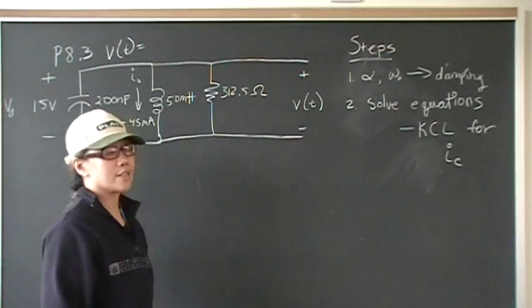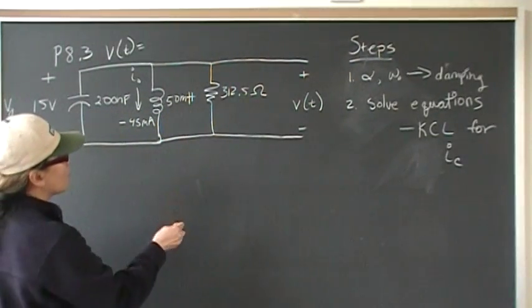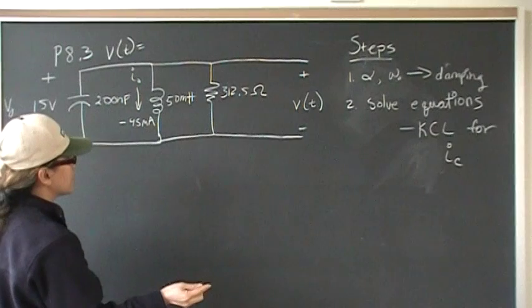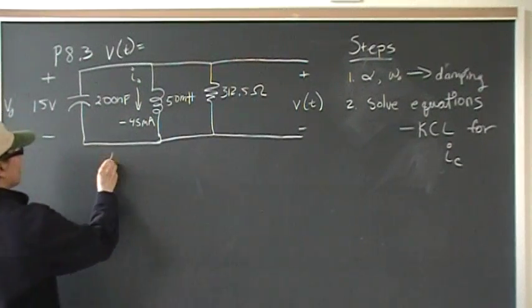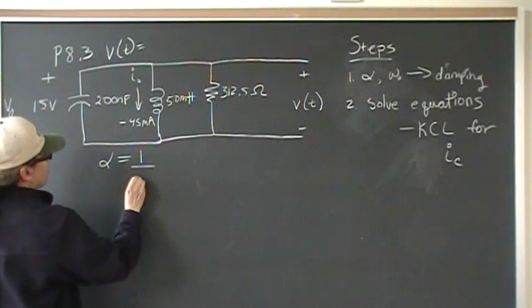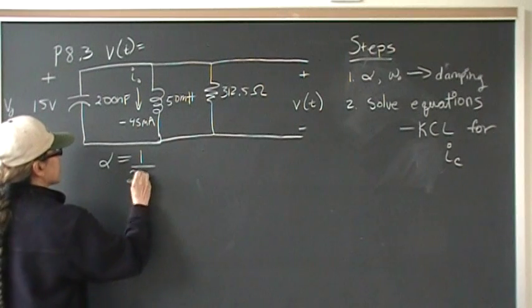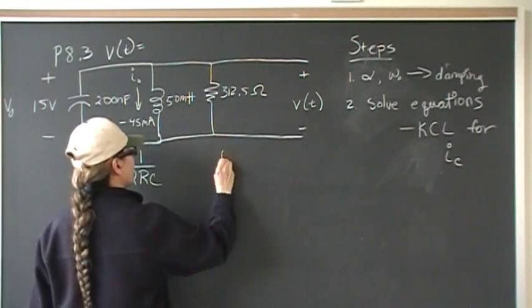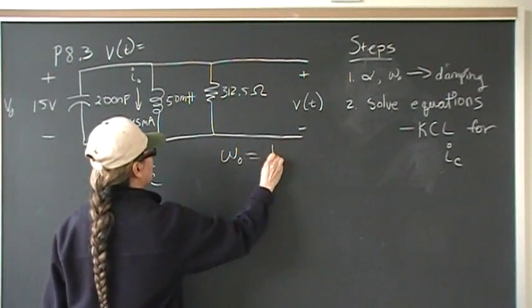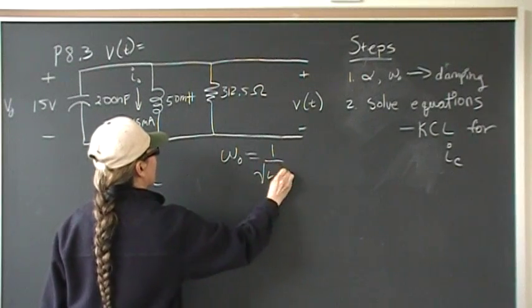Okay, so let's start. We have to find out what set of equations to use. So first, let's just state that alpha is 1 over 2RC and omega naught is 1 over the square root of LC.